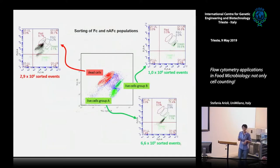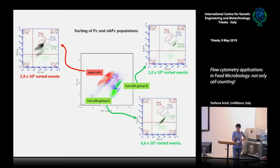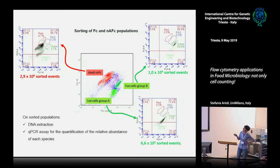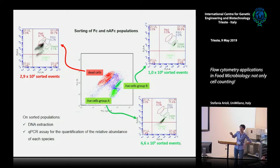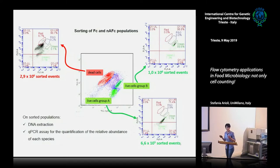How can we overcome this limitation of flow cytometry? We use the fluorescent-activated cell sorter (FACS). Basically, we selectively sort the two live cell populations — group A and group B, which differ based on their green fluorescence — and also sort the population of dead cells. These three images show the verification after sorting of these three different populations.